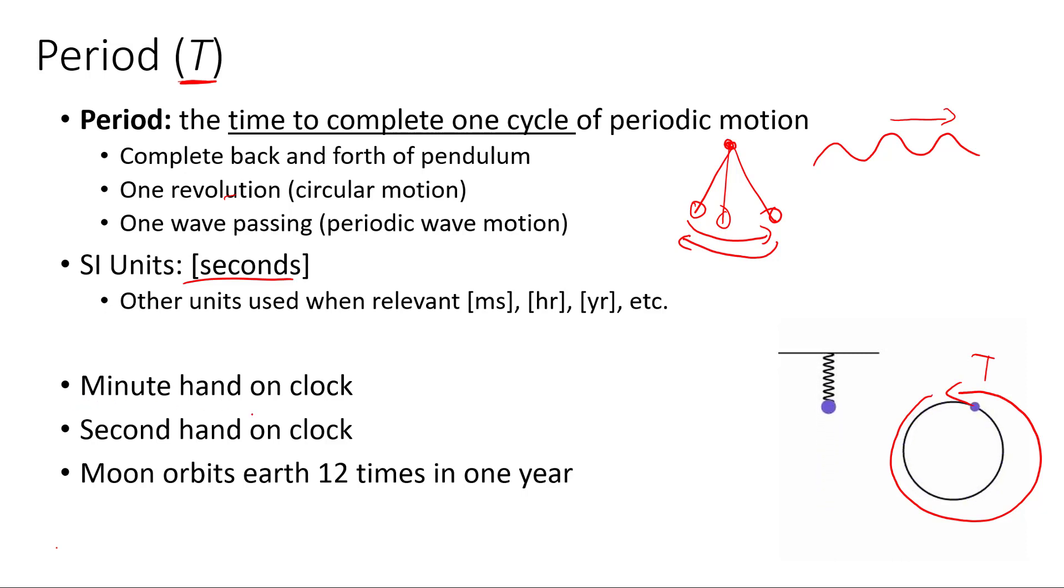So let's think about the period for the minute hand on a clock. The minute hand is the hand that points out the minutes. It goes around once every hour, so the time it takes is one hour, or we could also write it in minutes as 60 minutes, or if we wrote that in seconds it would be 3600 seconds. The period for the second hand on the clock, well the second hand takes one minute to go around, so our period is just one minute or 60 seconds.